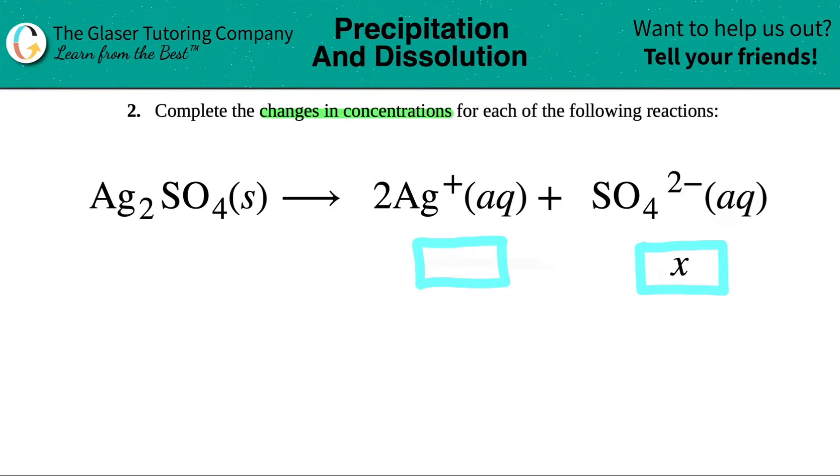Well, remember, changes in concentrations always come from your balanced equation, but more specifically, it comes from your coefficients, the mole ratio.